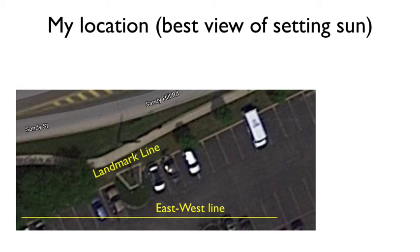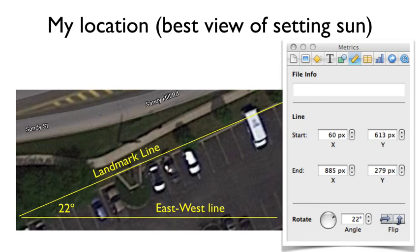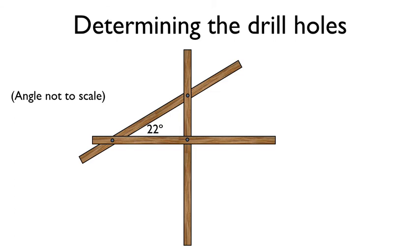So here's my east west line. I'm going to call that concrete line, the landmark line. And when I drew a line, I measured to be 22 degrees. So what I need to do is I need to determine how to drill my holes to incorporate this 22 degree angle.